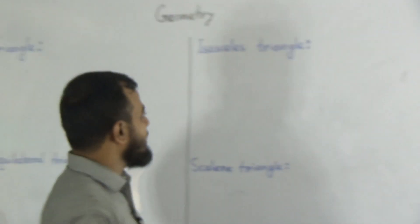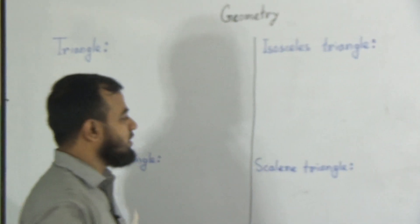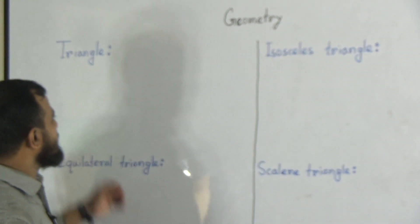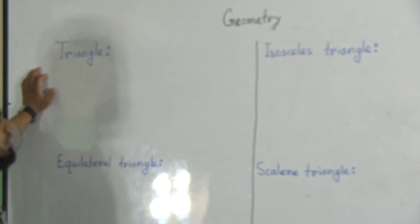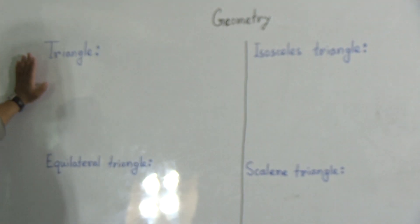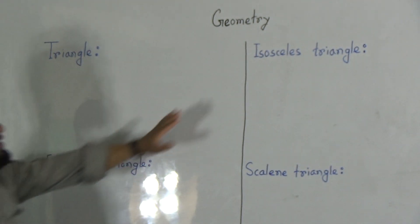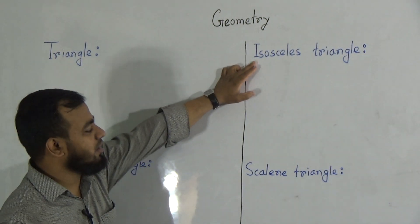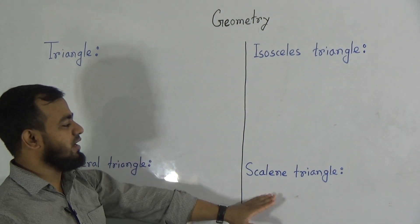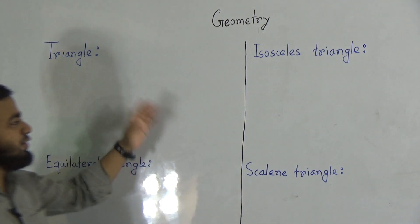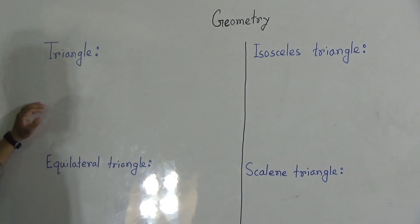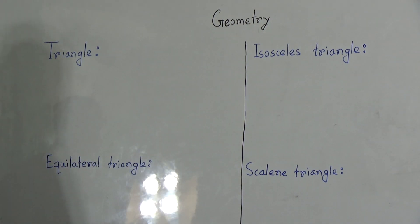My dear students, in geometry, in the half-yearly examination, you have learned a lot of things. Today we will learn about triangle, equilateral triangle, isosceles triangle, and scalene triangle — these four we will learn today. It's your classwork.